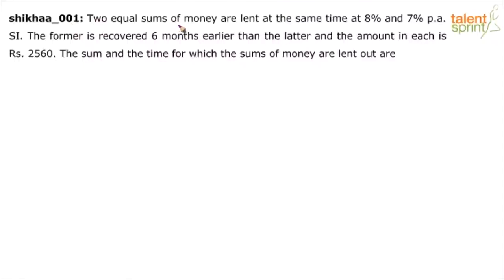Two equal sums of money are lent at the same time at 8% per annum and 7% per annum simple interest. The former is recovered 6 months earlier than the latter, and the amount in each case is Rs. 2560. We need to find the sum and the time for which the sums of money are lent out.